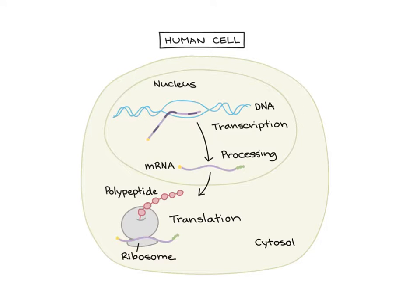The answer is we're going to copy it onto RNA first. RNA can leave the nucleus, and so this is going to be our messenger. What will happen first is we will take a segment of DNA that contains the instructions for making a protein — we call this a gene — and we're going to copy that gene onto a piece of RNA. This is done inside the nucleus, and this process is called transcription.